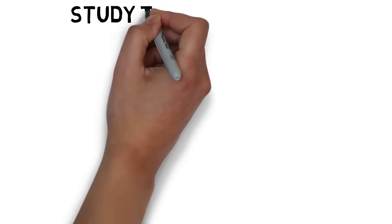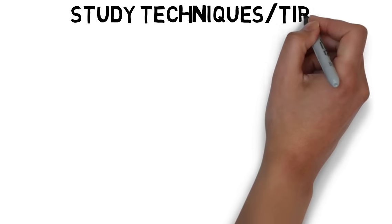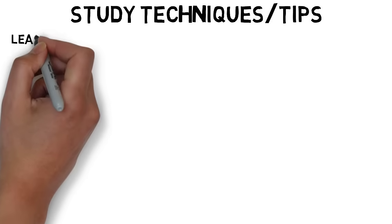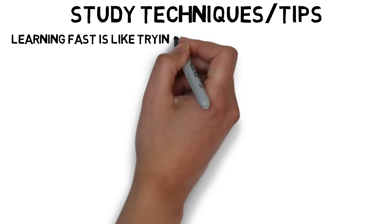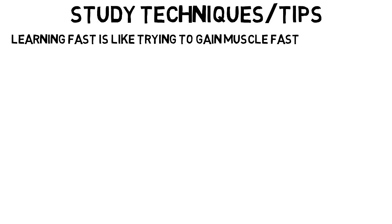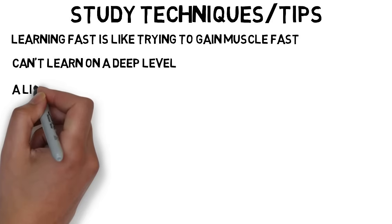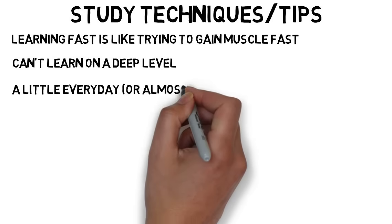Now let's get into some more specific study techniques and tips. When it comes to learning math and science, learning fast is like trying to gain muscle fast. It will just burn you out. Although you can maybe memorize things very quickly, you can't learn on a deep level in one or two nights. So that's why you need to learn a little every day or at least as much as possible.